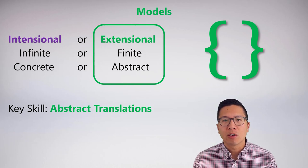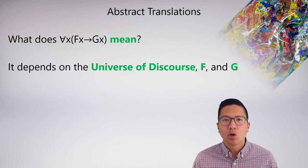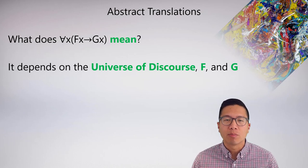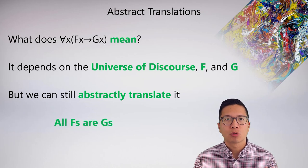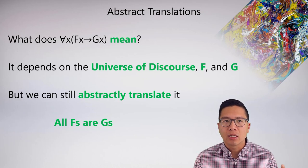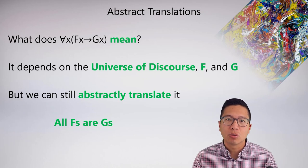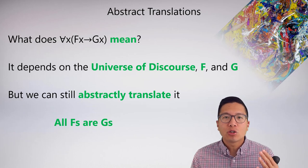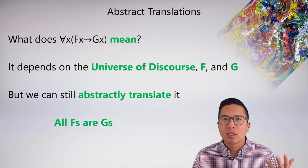Fortunately, abstract translation is something we practiced in previous units when we had to translate symbolic sentences back into English. So when you take a look at a sentence like 'for all x, fx arrow gx,' the meaning depends on the universe of discourse and how we define the f predicate and the g predicate. But even without a full definition, we can abstractly translate 'for all x, fx arrow gx' — it really just means all f's are g's, where 'all' means all things in the universe of discourse.